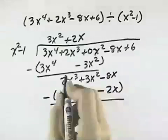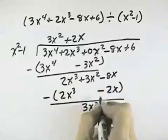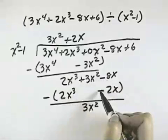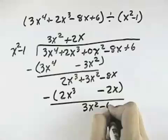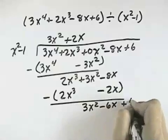Subtracting, the x cubed's cancel, leaving 3x squared, because there's nothing to subtract that from. Negative 8 minus a negative becomes plus 2, so that's minus 6x. I'll bring down my last 6.